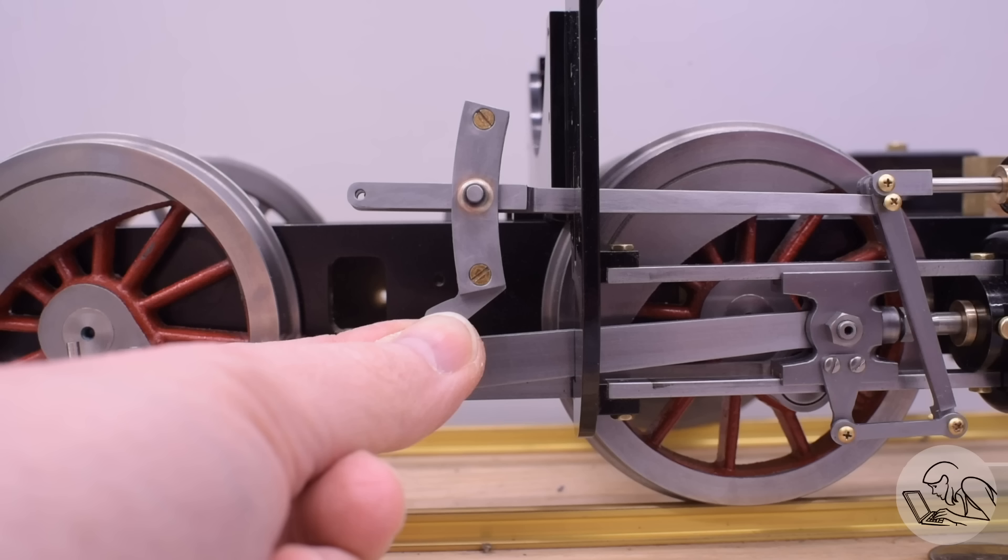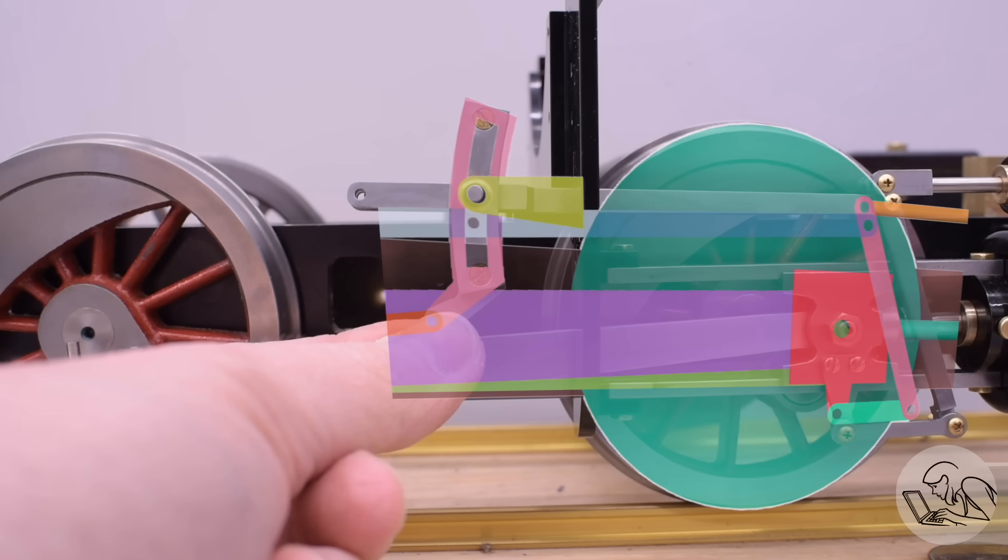When last we left our valve gear, we had the expansion link finished, that complex assembly that threads over the radius arm and allows us to adjust the valve gear hookup. Now we need the link bracket, shown here in green. This allows the expansion link to pivot back and forth as the valve gear cycles and ties everything to the motion bracket, effectively fixing the rear end of all the valve gear in place. I think it also really ties the room together.